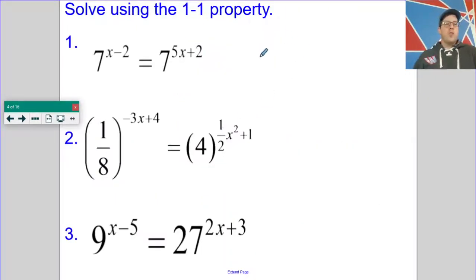To use the 1 to 1 property, you have to ask yourself, do two exponential expressions, say the left side of the equation and the right side of the equation, do they have the same base? If they have the same base, then their exponents must be equal to each other. So we can go directly from this equation to a much simpler equation, a much easier equation to solve.